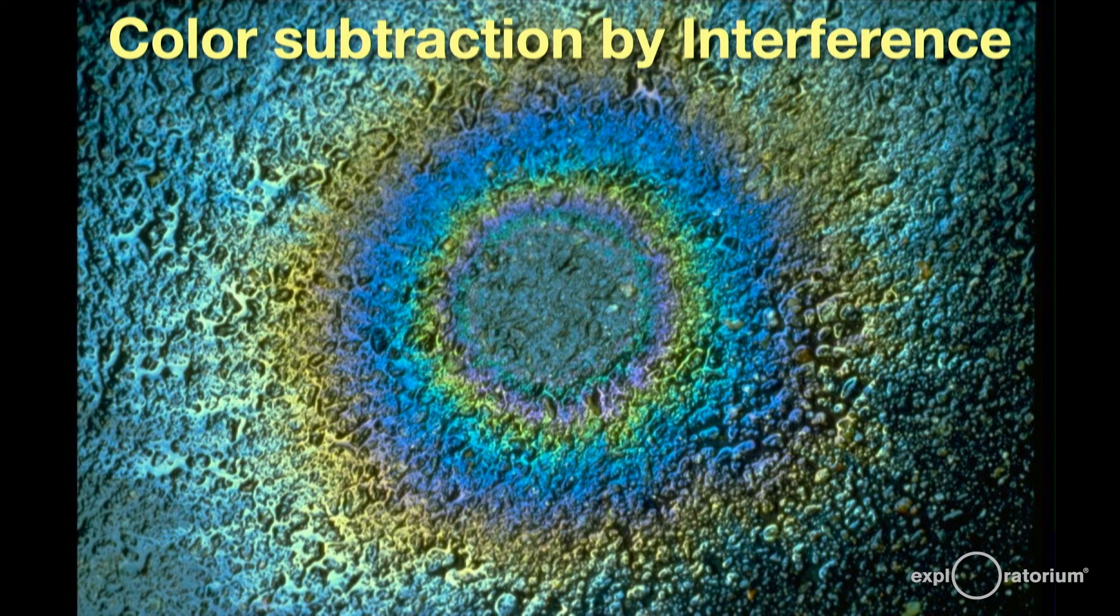The same colors are seen on the street after a rain. A drop of oil or gasoline creates a thin layer on the pavement resulting in beautiful subtractive interference colors.